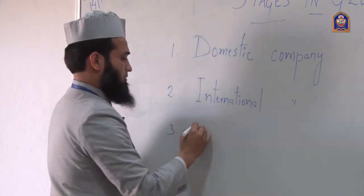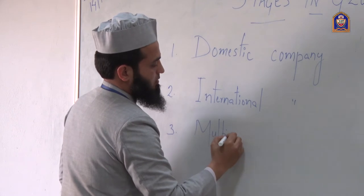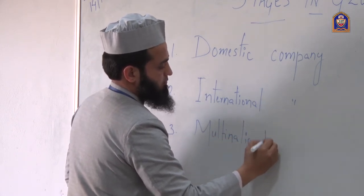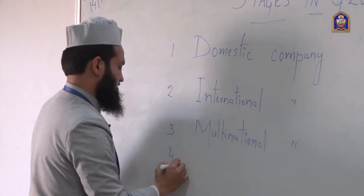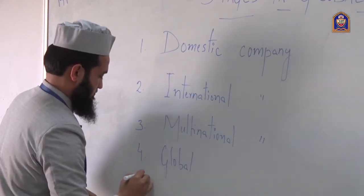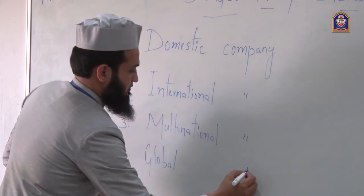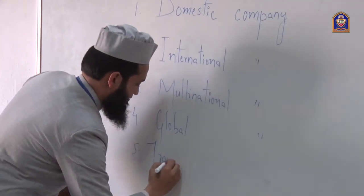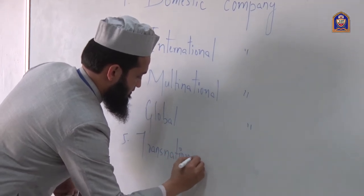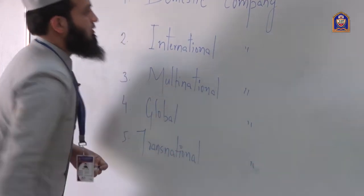The third stage is multinational. The fourth is global, and the fifth is transnational. So these are the five stages in globalization.